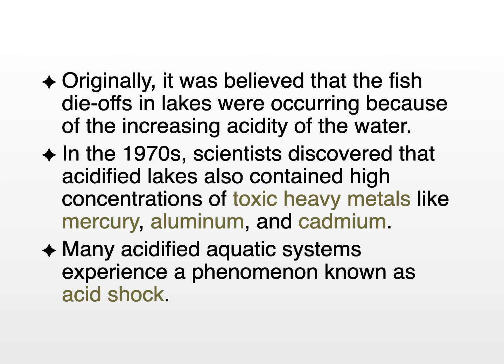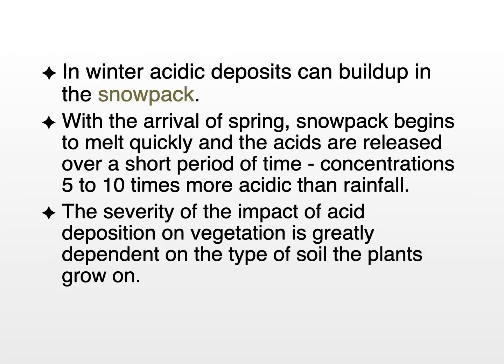Another phenomenon observed in middle-latitude ecosystems was acid shock. This was related to the buildup of acidic snow and ice on the ground surface, and then with the sudden melting of the snowpack, a rapid flush of water rich in acids entered the soil system and then the lake. The concentrations of acids in this flush were anywhere from 5 to 10 times more acidic than a simple rainfall event.